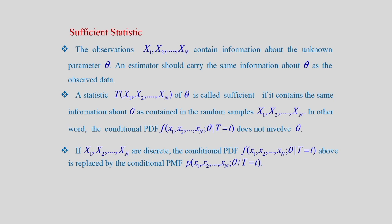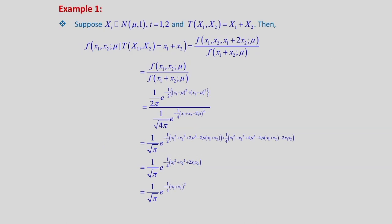We have defined sufficient statistic — let us see an example. Suppose Xi is normally distributed with mean mu and variance 1 for i = 1 to 2, and T(X1, X2) = X1 + X2. We will examine if T(X1, X2) is a sufficient statistic.